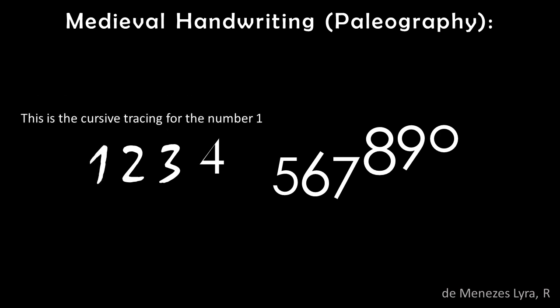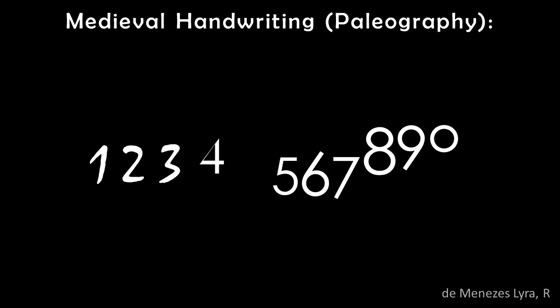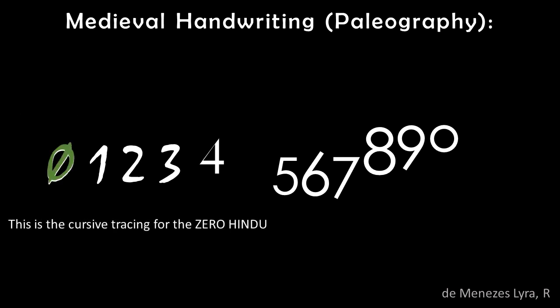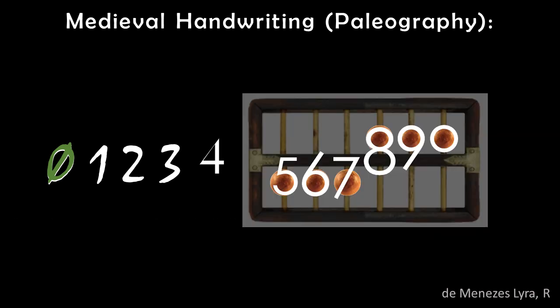This is the way the first digit is written, with a single angle — this is the cursive tracing for the number 1. This is the cursive tracing for the 0. The 0 glyphs are descended from the Indian Brahmi numerals.